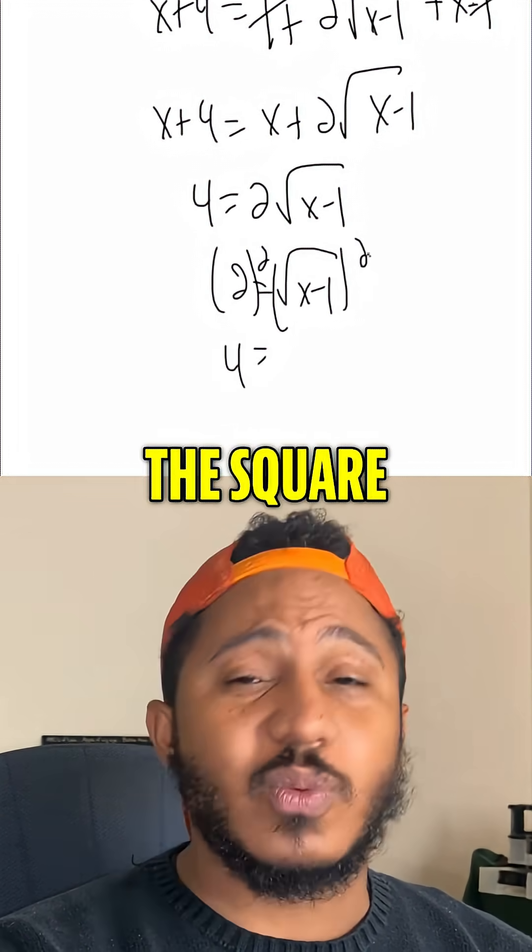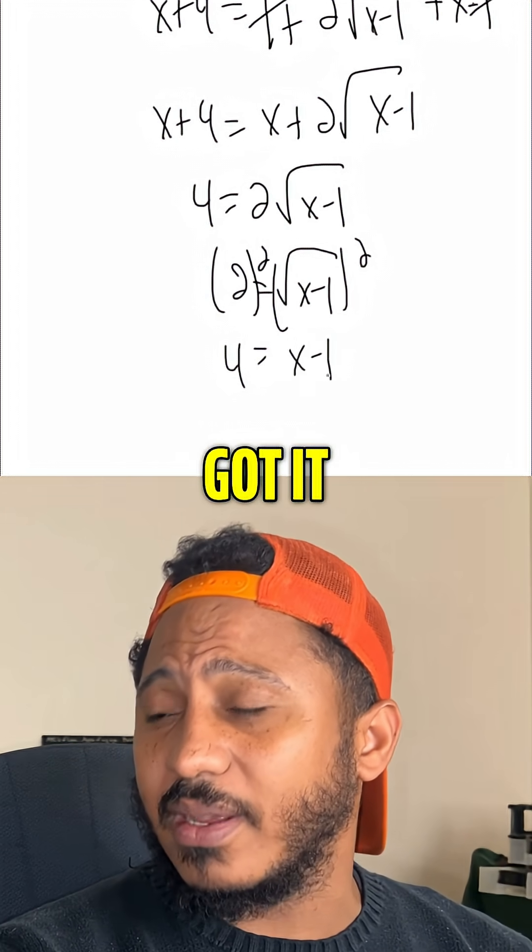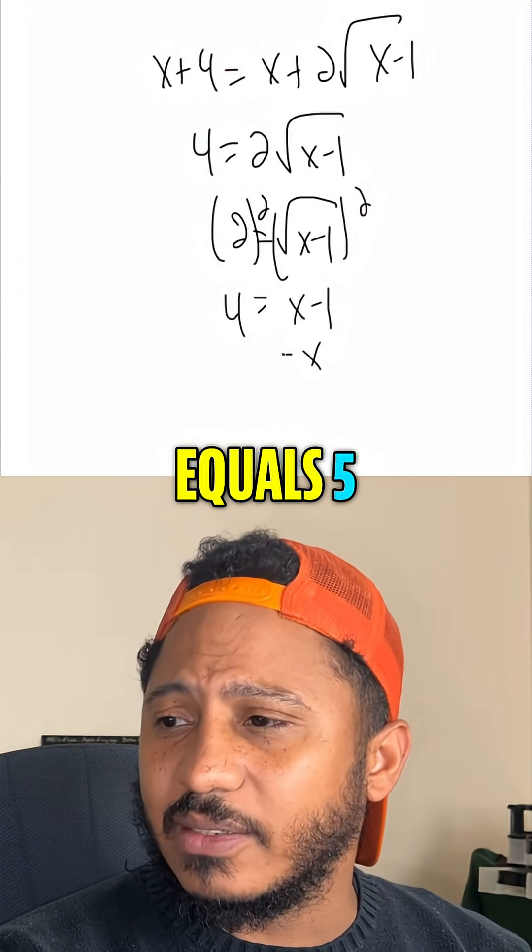And then squaring the right-hand side, the square root and the square cancel, we get x minus 1. And so, adding one to both sides, we get x equals 5, and so that would be our solution.